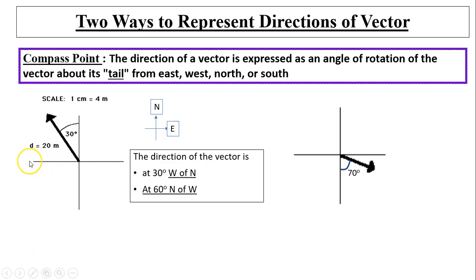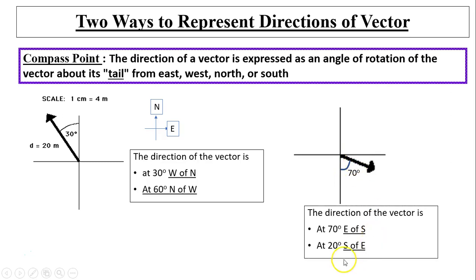You can alternatively say 60 degrees north of west — from west, going 60 degrees into the north direction — so both are correct ways to indicate the direction of this vector. For another example, the angle from south to the vector is 70 degrees going toward east, so the direction is 70 degrees east of south. Because the total is 90 degrees, you can also say 20 degrees south of east.